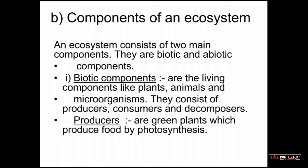Producers are green plants which produce food by photosynthesis. Just as plants make their own food, producers use photosynthesis — with the help of sunlight. So the ultimate source of energy is sunlight.